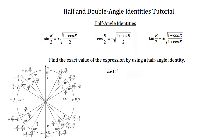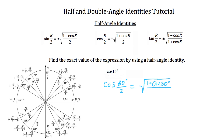They're asking us for the cosine of 15 degrees. Now, 15 degrees is half of 30 degrees, so I could write it as the cosine of 30 over 2. So the cosine of 30 degrees over 2, which is 15 degrees, is equal to the positive or negative square root of 1 plus the cosine of r, where r is 30 degrees — not 15 — because half of r is 15, and that whole expression is written over 2.